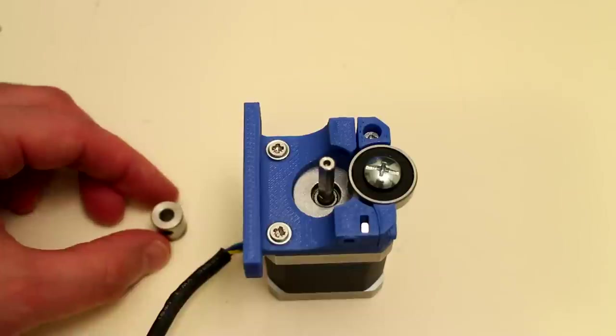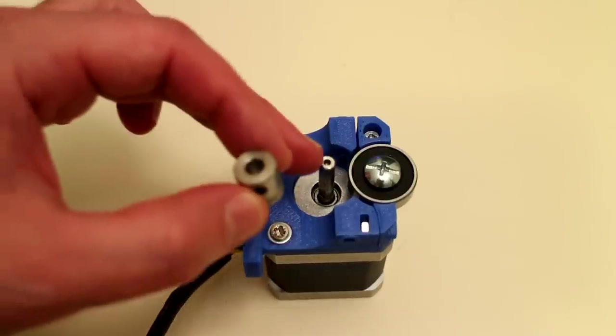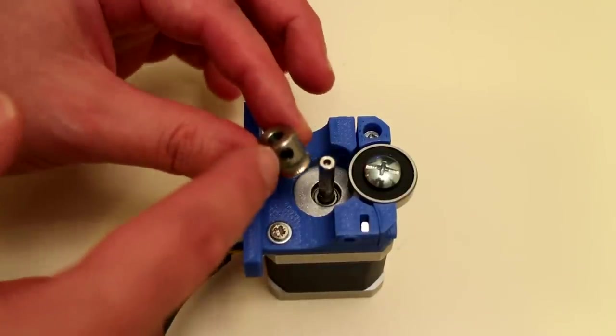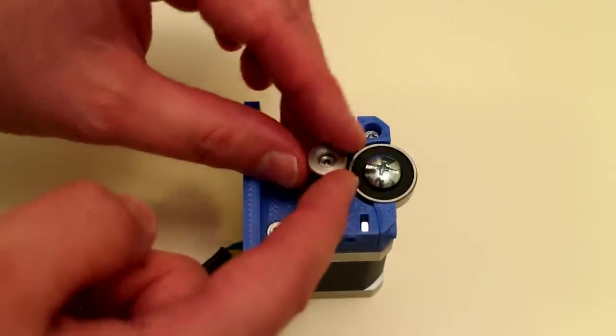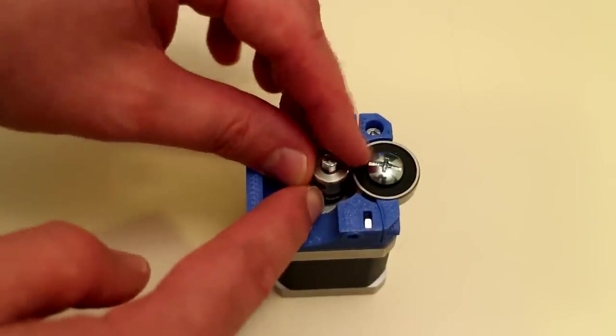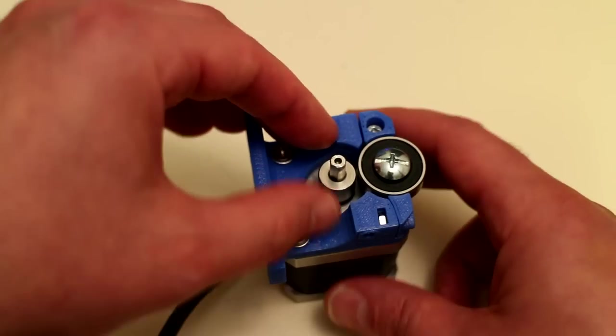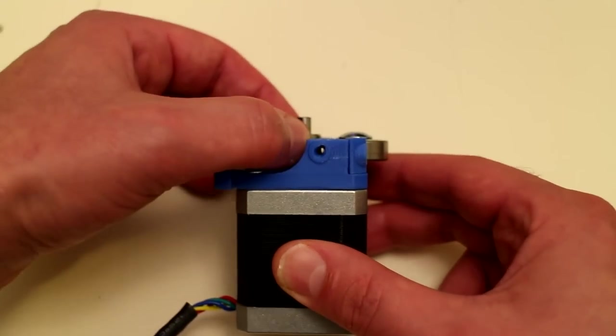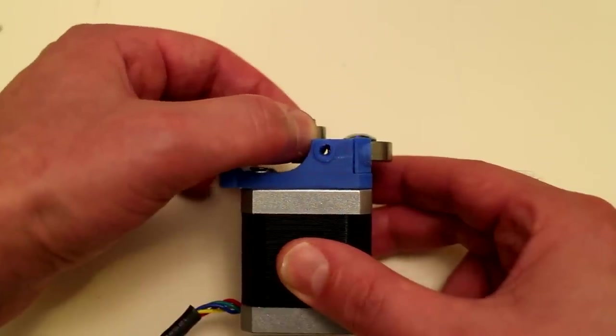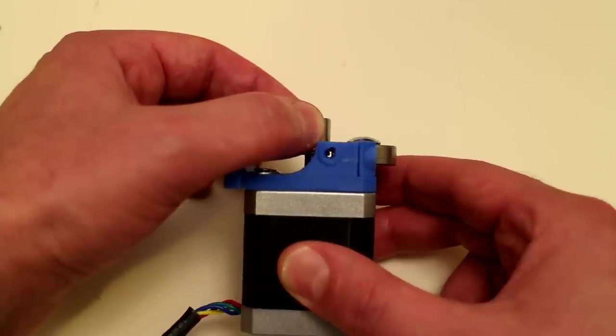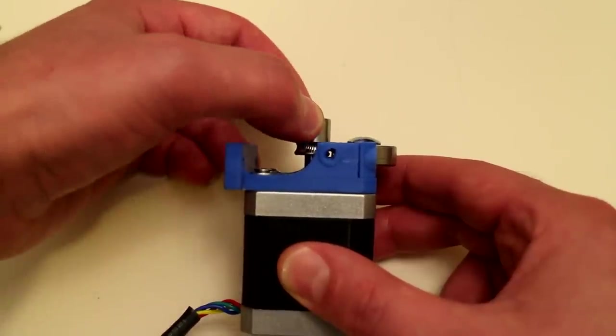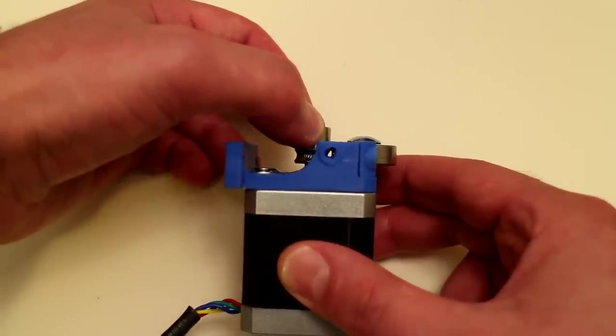To attach the Mk7 drive gear to the stepper motor, simply align the grub screw of the drive gear with the flat of the shaft. Use an Allen key to tighten the grub screw to the flat of the shaft. You'll want to align the grub screw so the teeth are lined up with the filament guide within the Bowden mechanism. You can see there it's too high, there it's too low, and there it's just right. Go ahead and tighten the grub screw in that position.